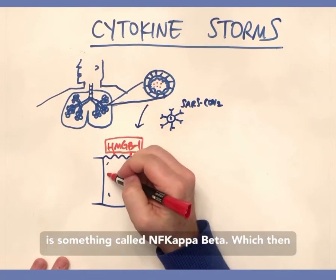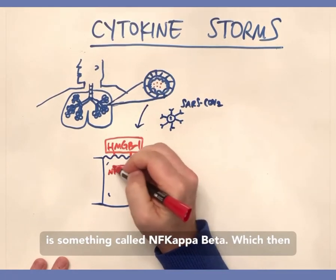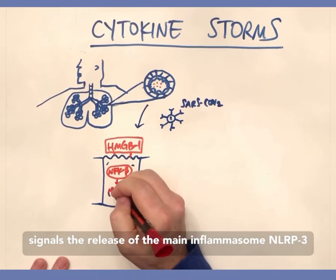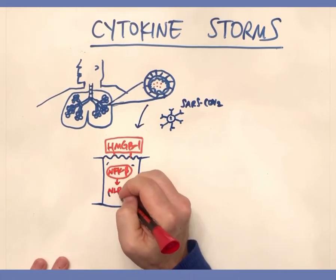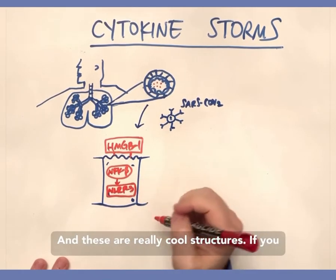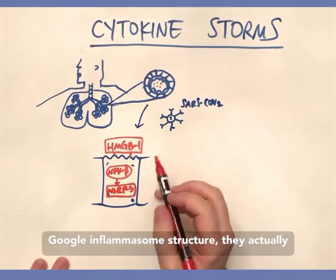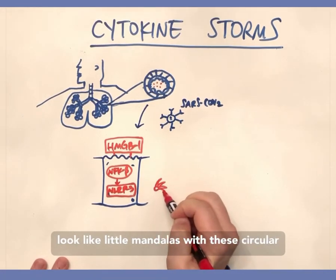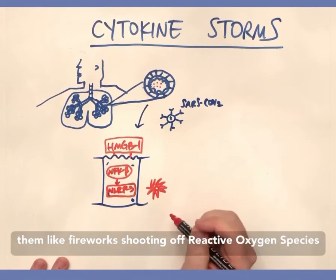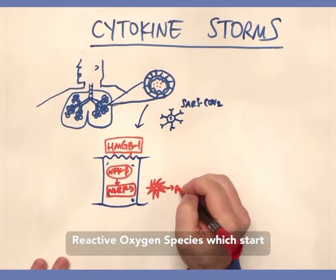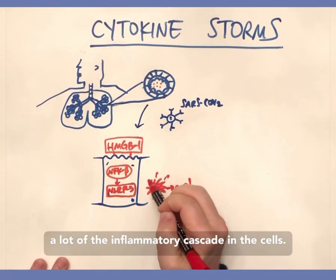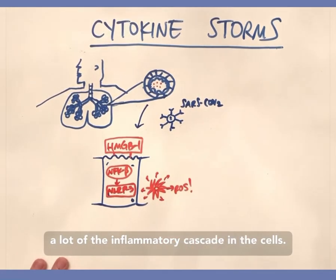One of the first things triggered is something called NF-kappa-B, which then signals the release of the main inflammasome, NLRP3. These are really cool structures — if you Google inflammasome structure, they actually look like little mandalas, circular wheels with spokes coming off of them. You can almost think of them like fireworks shooting off reactive oxygen species, which start a lot of the inflammatory cascade in the cells.